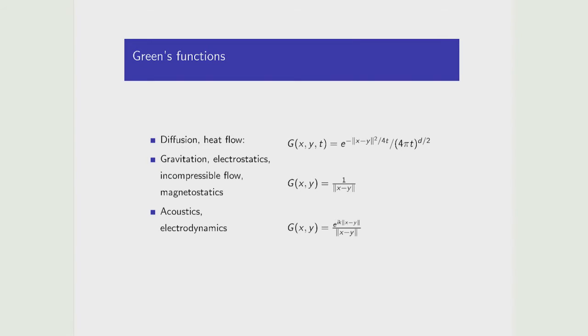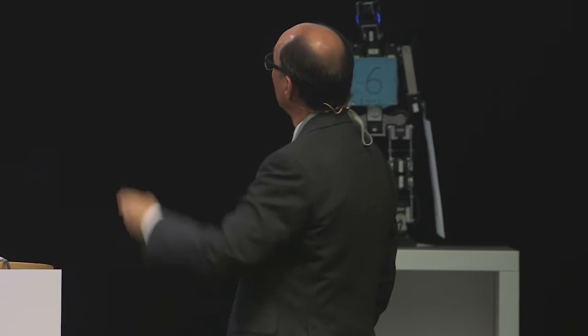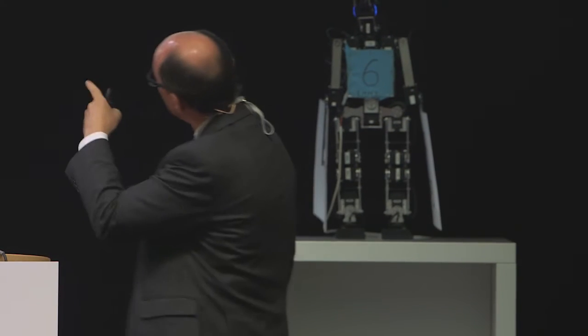Green's functions come in a few forms. There's a Green's function for heat flow, which is a Gaussian — e to the minus distance squared. There's a Green's function for gravitation, which is one divided by distance. And there's a Green's function for wave propagation, which takes the more complicated form of e to the ik times distance divided by distance. That's the math lesson.